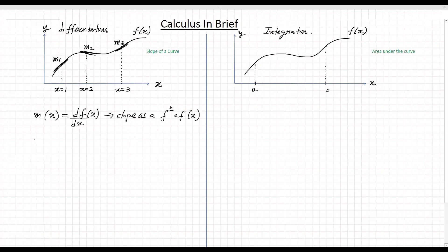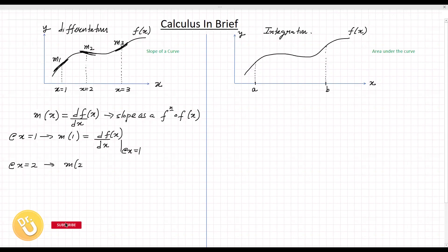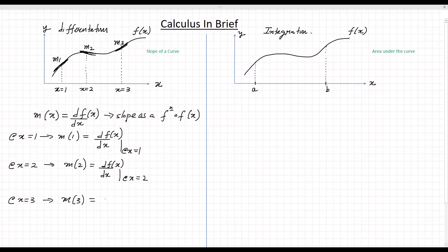Now, if you want to find the slope values at individual points — for example, at x equals 1 — you can find the slope by plugging 1 in, which gives d/dx of f(x) evaluated at x equals 1. Similarly, at x equals 2, you plug that value in to find the slope at x equals 2. And at x equals 3, we can find the slope as d/dx of f(x) evaluated at x equals 3. So by differentiation, we can get the slope of a curve.